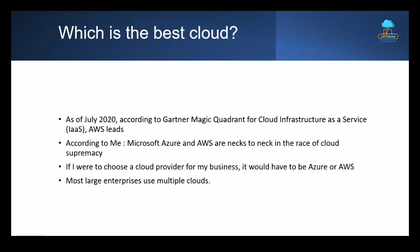Both Azure and AWS offer great products, services, and cost, while Google and IBM are getting better each day. If choosing a cloud provider for a business, it would have to be Azure or AWS — both companies are way ahead in the race. Most large enterprises use multiple clouds: for example, AWS for file storage and messaging, Azure for DevOps, databases, and developer tools, and Google Cloud for documents and emails. One size does not fit all — figure out your needs.